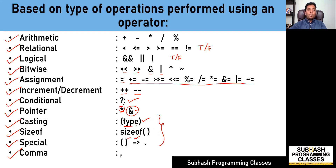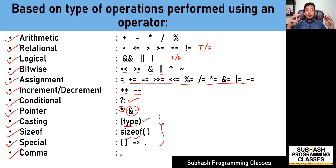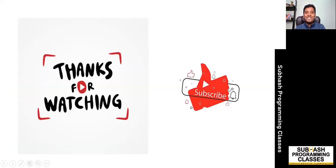So these are the different kinds of operators. In the upcoming lessons, I'm going to teach you each and every operator in detail with a lot of expressions, and I'll also show you how to use priority and associativity rules to evaluate expressions. Hope you understood how to classify your operators in C language based on these two parameters. Hope you enjoyed this lesson — please like this video, subscribe to this channel, and click the bell icon so you don't miss any upcoming lessons in this programming series. Meet you in the next lesson. Until then, take care. Bye-bye!